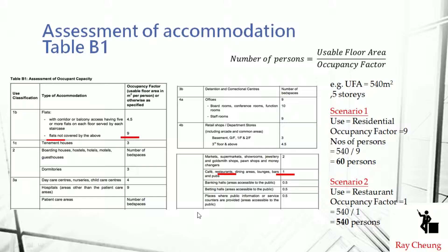You need to understand the basic formula: capacity (number of persons) equals usable floor area divided by occupancy factor. The occupancy factor is based on Table B1 from the Code of Practice. For example, with a UFA of 540 and residential use, the occupancy factor is 9, giving 60 persons. If the use is a restaurant, the occupancy factor is 1, meaning we assume 540 persons.